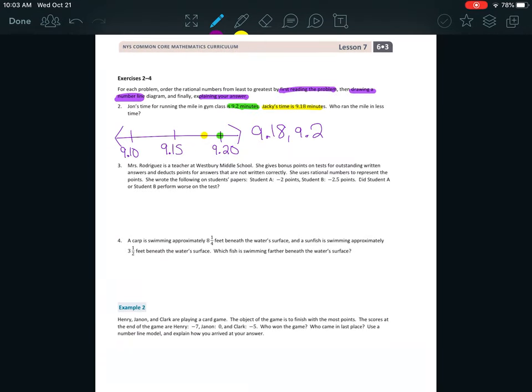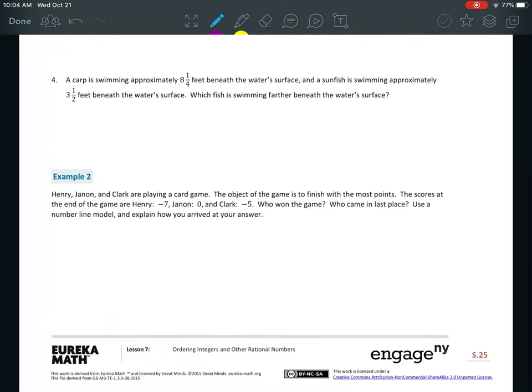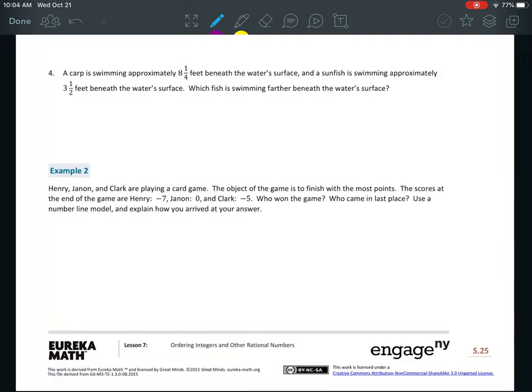So, for 3 and 4, you will be doing the same thing as we did up there. You need to read it. You need to decide. You can do vertical. You can do horizontal. Do the one that makes the most sense. Number 4, they're talking about fish beneath the water's surface. I would probably use a vertical number line there. Because that's visually how the water would be.